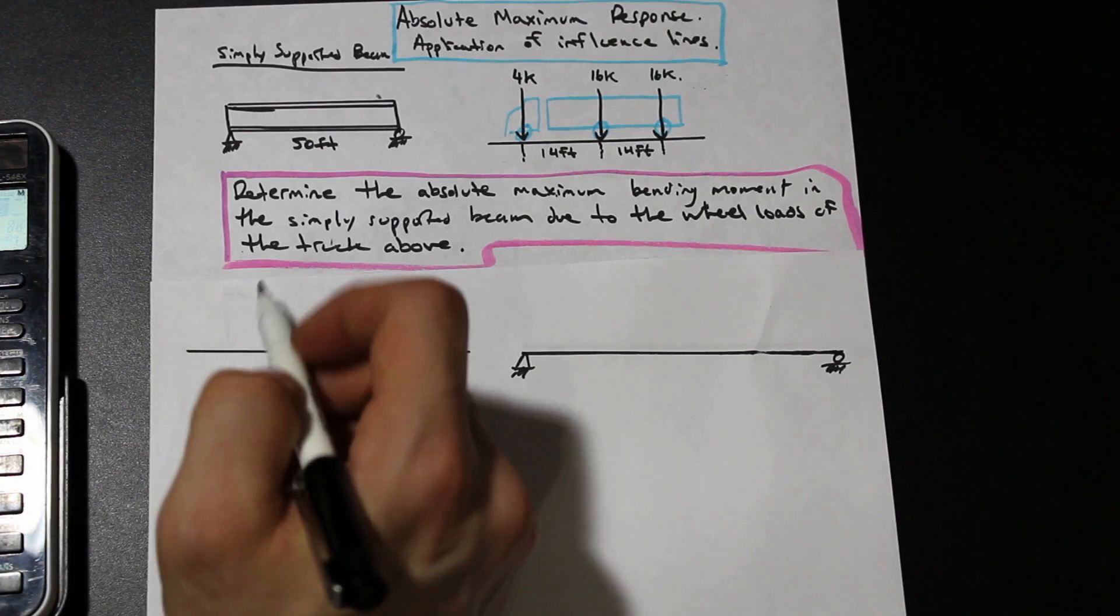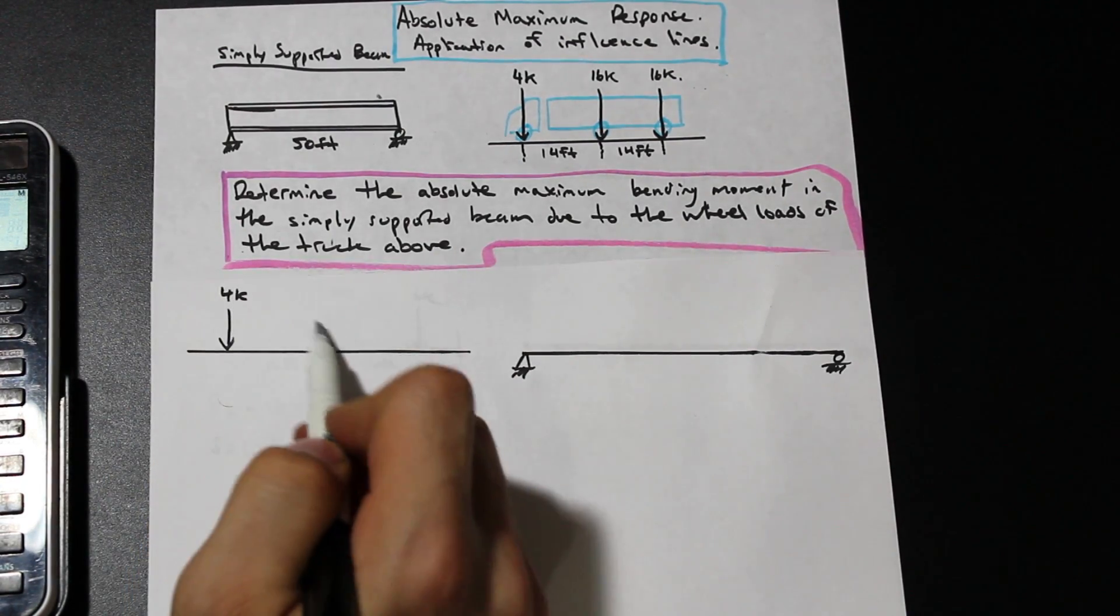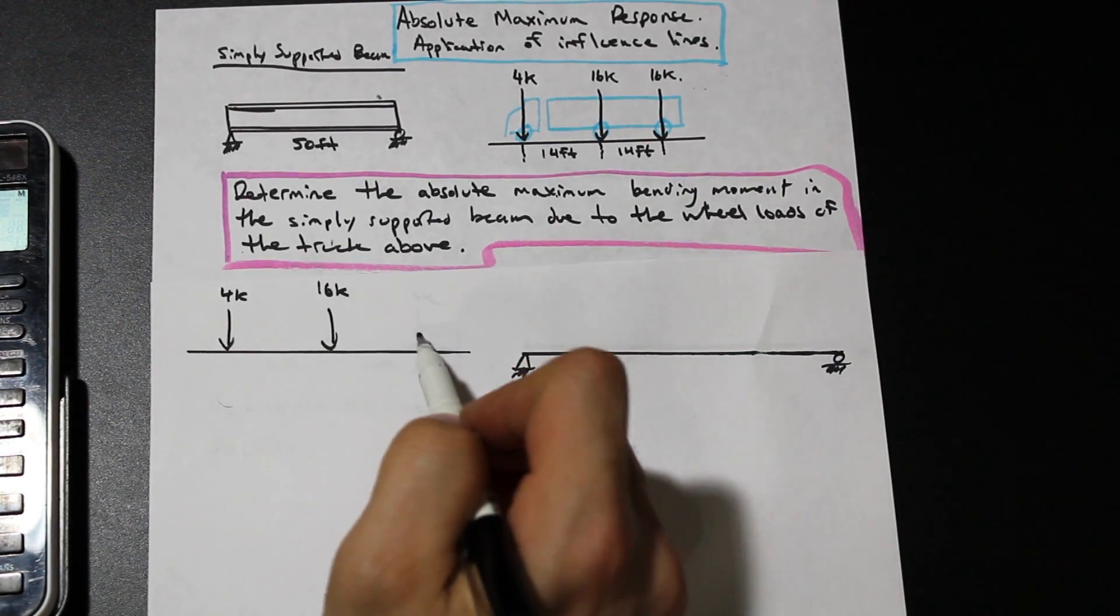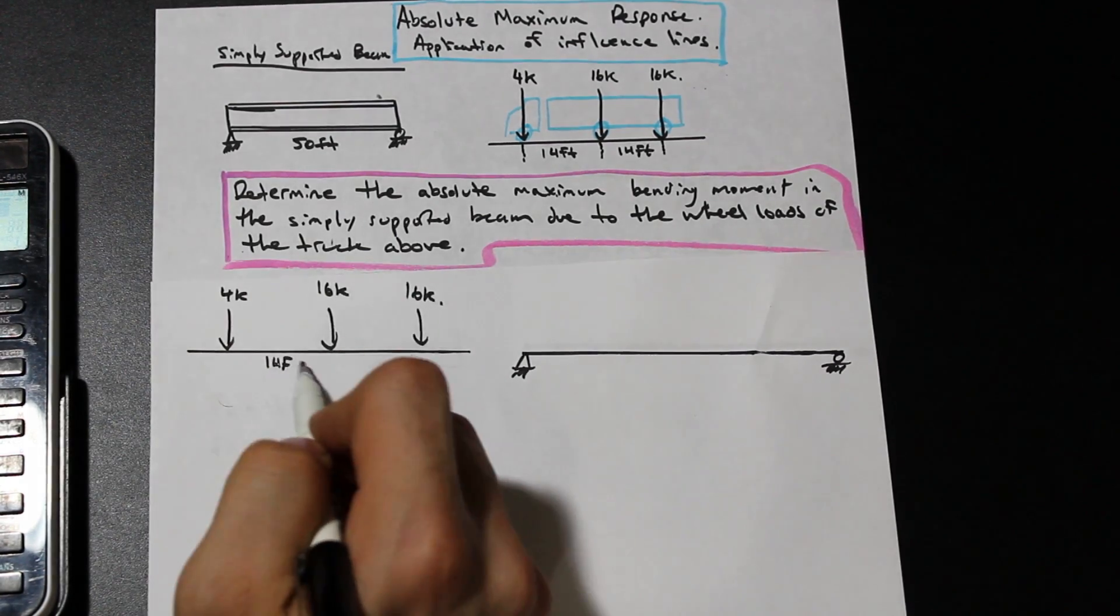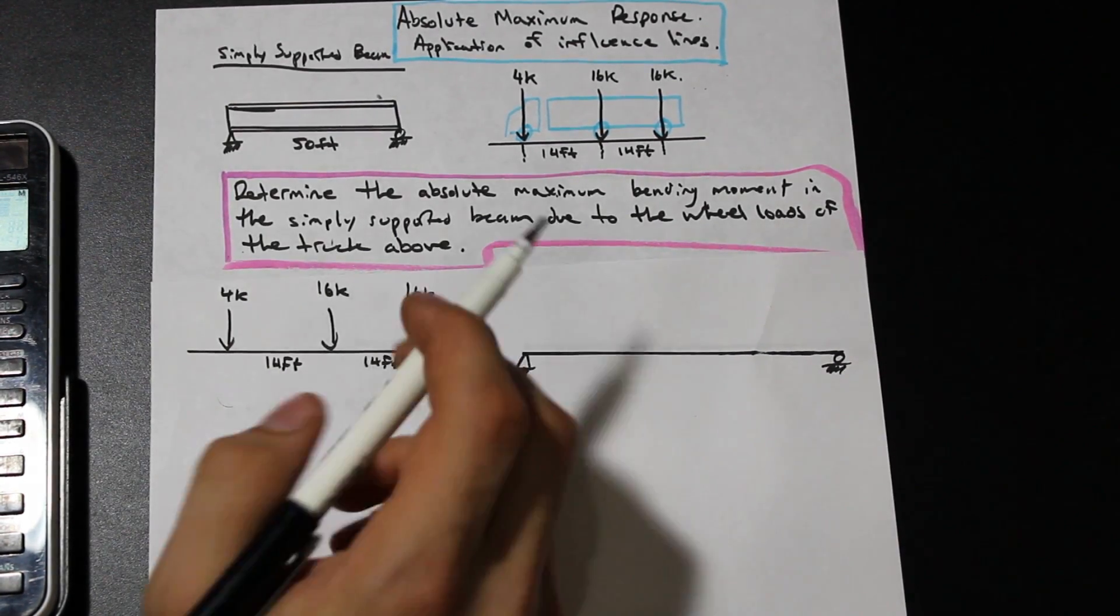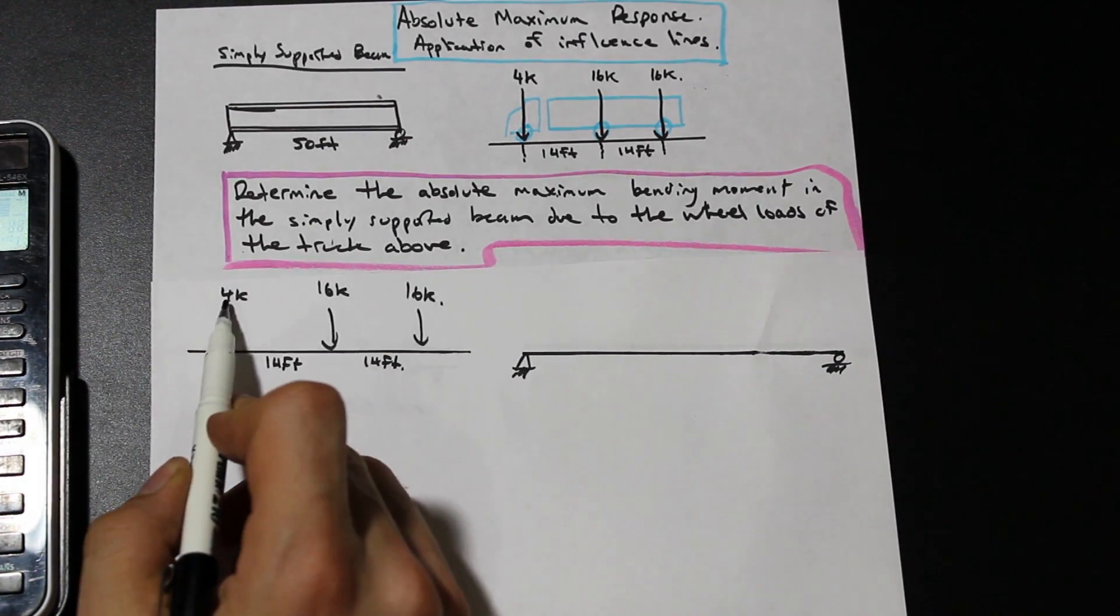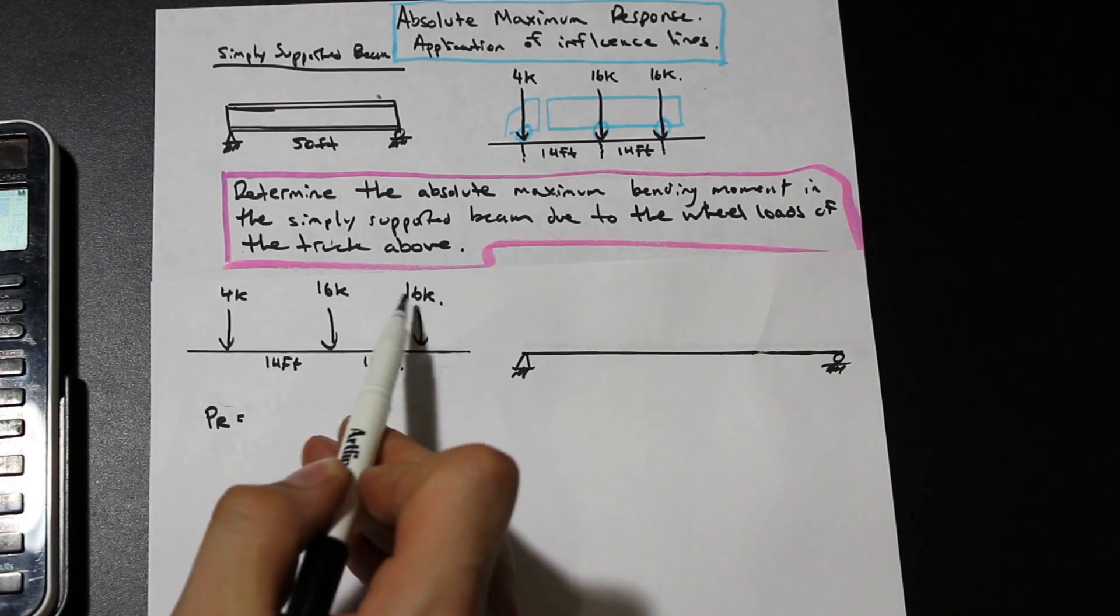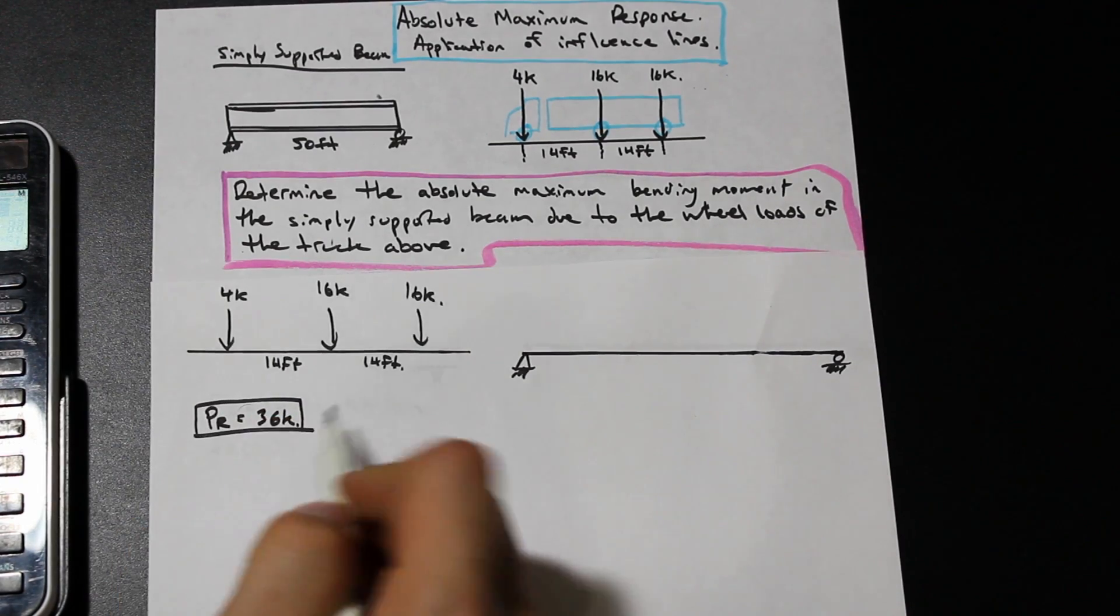First step in a question like this is to simply rewrite the loads over here on a nice fresh free body diagram. We have 14 feet here and 14 feet still. So the first thing to do is to sum up these forces and get the resultant force. So PR, we'll call it PR, and that's equal to 4 plus 16 plus 16. So that is 36 kip.